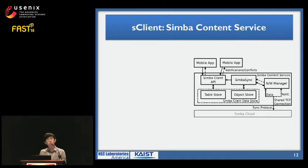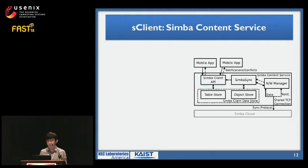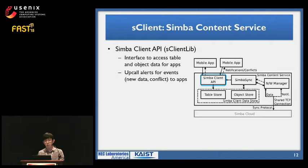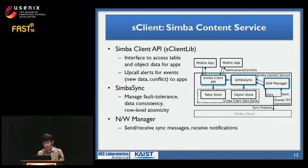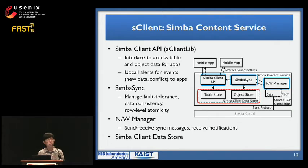Let's look at the Simba client. Basically, the Simba client is a service running inside the client device that manages tabular and object data and syncs updates with the Simba cloud. The Simba client API provides the interface for mobile apps to access table and object data and alerts events such as new data or conflicts. Simba Sync handles all sync-related operations including fault tolerance, data consistency, and row-level atomicity. Sync messages are sent and received via the network manager, which also receives push notifications from the Simba cloud. The Simba data store provides a unified store for interdependent tabular and object data.